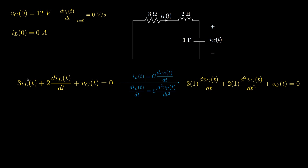We replace the inductor current with the capacitance — which is one — times the derivative of the capacitor voltage, and replace the derivative of the inductor current with the capacitance times the second derivative of the capacitor voltage, leaving the capacitor voltage unchanged.